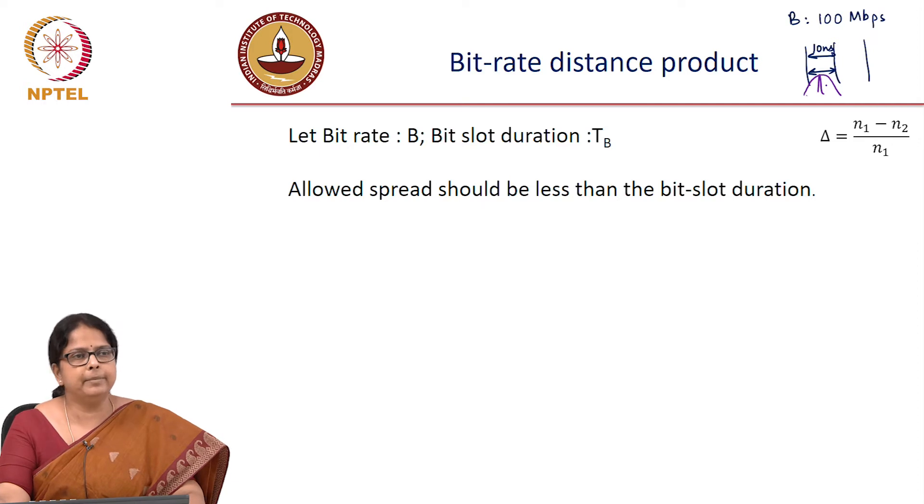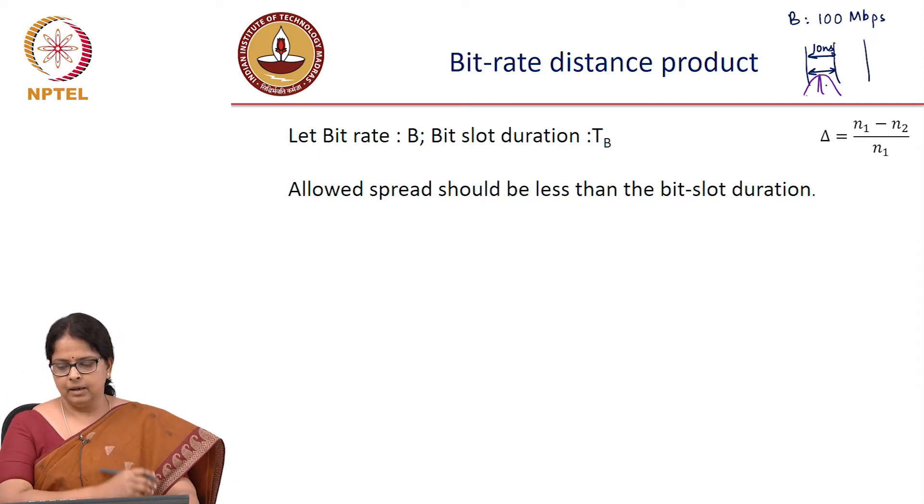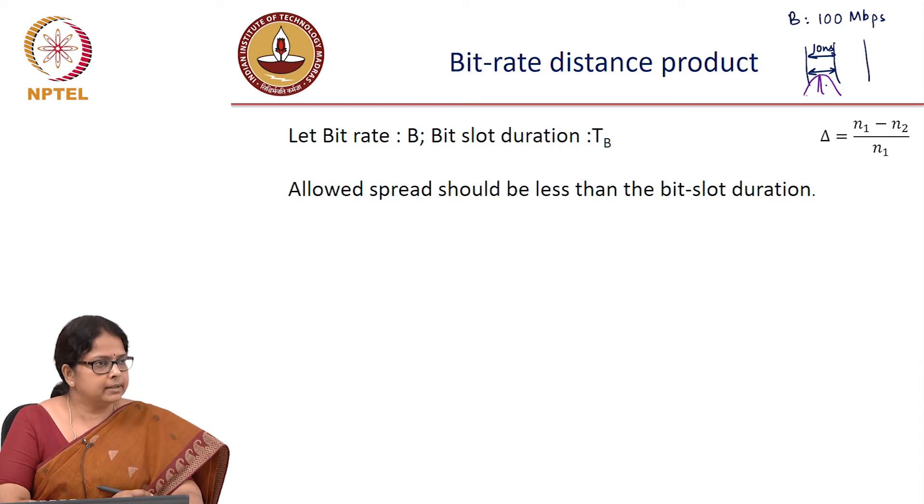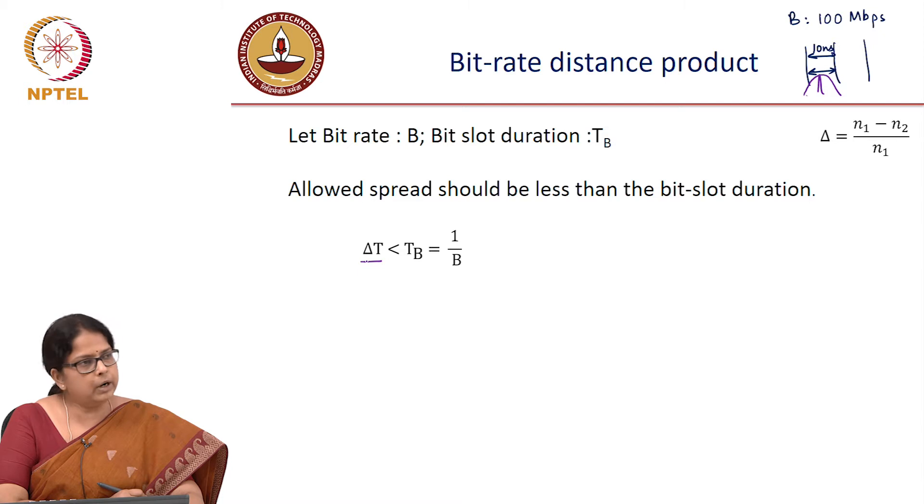So you do not want a spread beyond a bit slot. But I now can exactly calculate what that is. My delta T which is my spread should be less than the bit slot and I know the bit slot is 1 over bit rate.